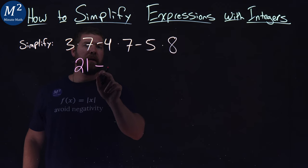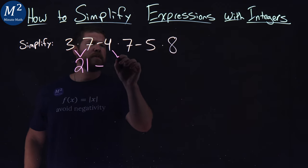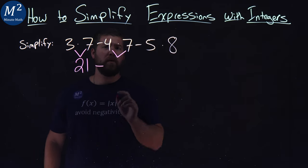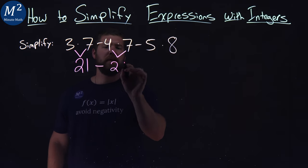Minus sign, bring it down. Then we have the 4 times 7, the next multiplication. Make sure you keep everything in order. 4 times 7 is a 28.